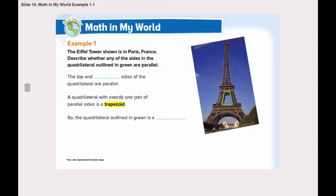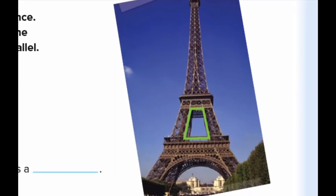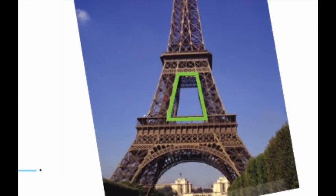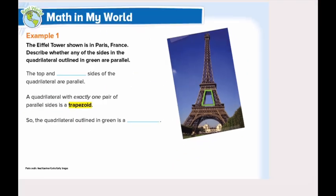Now let's go through example number one together. The Eiffel Tower shown is in Paris, France. Describe whether any of the sides in the quadrilateral outlined in green are parallel. Take a look at this quadrilateral. Are any of those lines outlined in green parallel? Let's think about it.